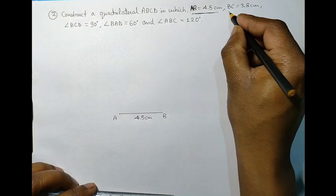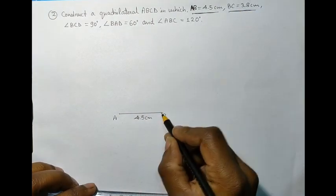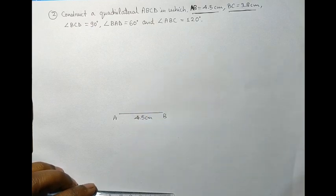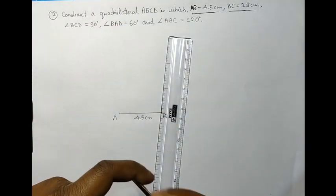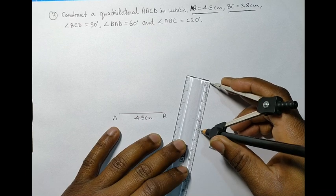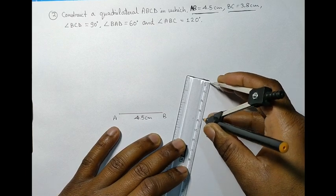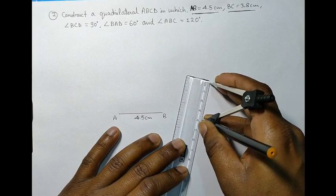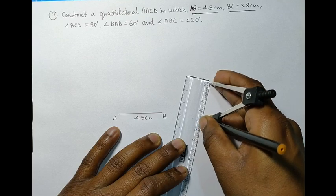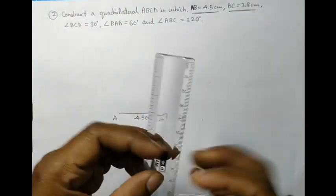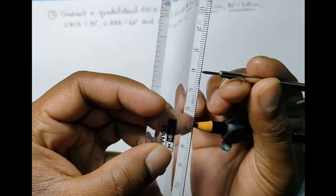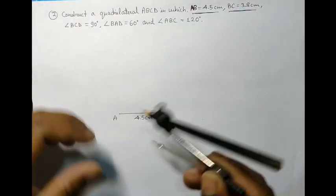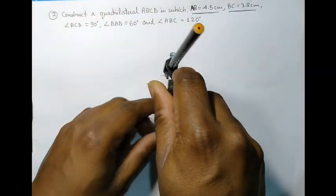Now, we have BC, 3.8 cm, but again, we do not know where C will lie. So, we will simply take the measurement of 3.8 cm. And, using the radius of 3.8 cm, we will cut an arc above B.